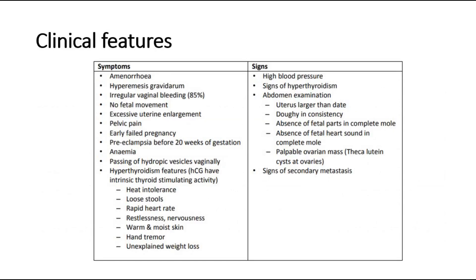Looking at the clinical features of hydatidiform mole, the symptoms include amenorrhea, hyperemesis gravidarum, irregular vaginal bleeding, excessive uterine enlargement, passing of hydropic vesicles vaginally which look like a cluster of grapes, and also hyperthyroidism features may be seen, which includes heat intolerance, loose stools or diarrhea, rapid heart rate, and warm and moist skin.